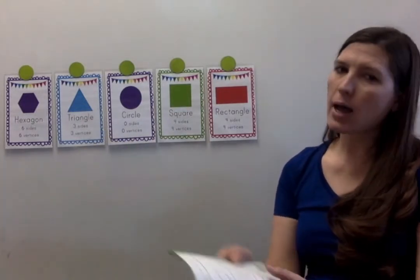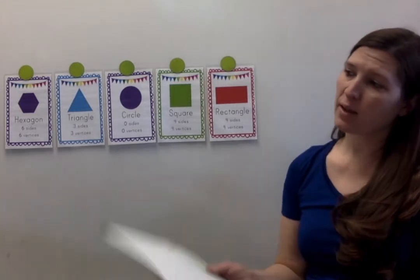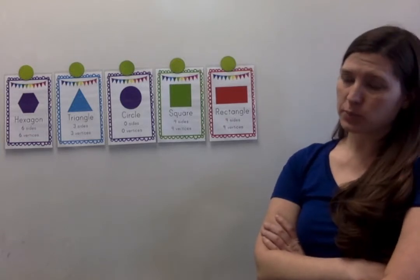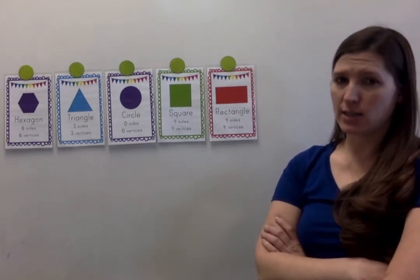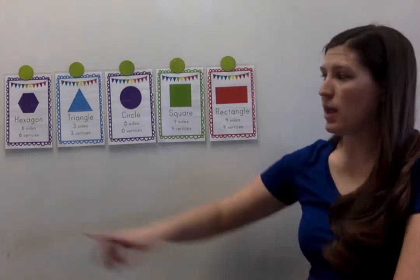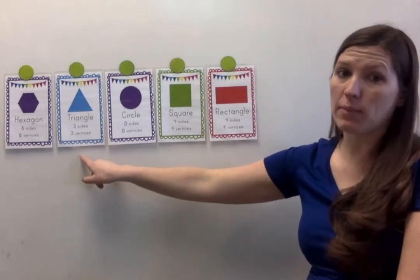All right, I'm thinking of a shape that has, excuse me, I'm thinking of a shape that has 3 flat sides. Which one has 3 flat sides? Triangle. Triangle, because tri means 3.